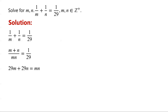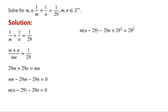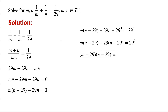Let's rewrite this equation to make it more manageable: mn minus 29m minus 29n equals zero. The first two terms on the left-hand side have a common factor m, so they can be factorized as m times (n minus 29). Now we add 29 squared to both sides of the equation. Negative 29n plus 29 squared can be factored as negative 29 times (n minus 29). Now the two terms on the left-hand side have a common factor (n minus 29), so they can be factored as (m minus 29) times (n minus 29).